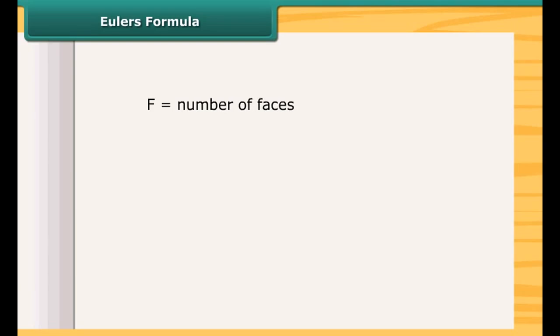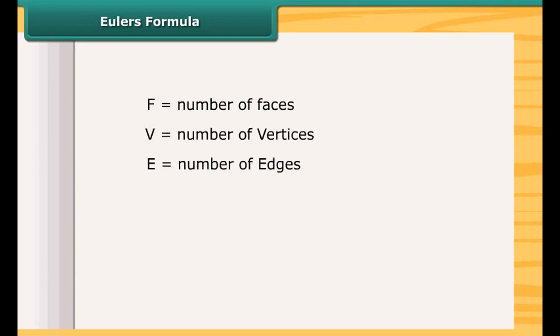If F stands for number of faces, V stands for number of vertices, and E stands for number of edges, then Euler's formula is: F plus V equals E plus 2. That is, F plus V minus E equals 2.